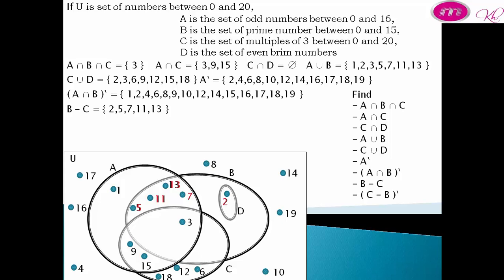Complement of C difference B equals {1, 2, 3, 4, 5, 7, 8, 10, 11, 13, 14, 16, 17, 19}.